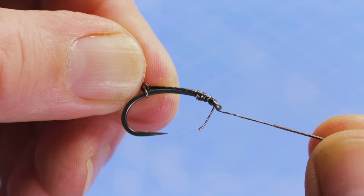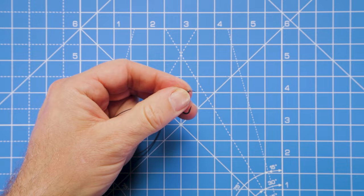Just make sure it's all nice and straight and neat. There we go, that's the hook secured into place via the knotless knot. Now that little bit of tag end that's left, we'll just trim that away.